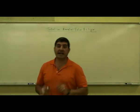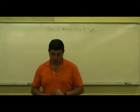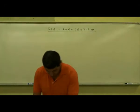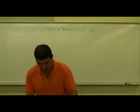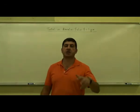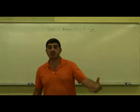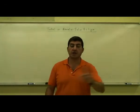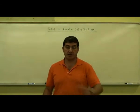The difference between total and annular solar eclipse and why they happen. In astronomy, we learn that the distance between the Earth and the Sun and the distance between the Moon and the Earth vary.